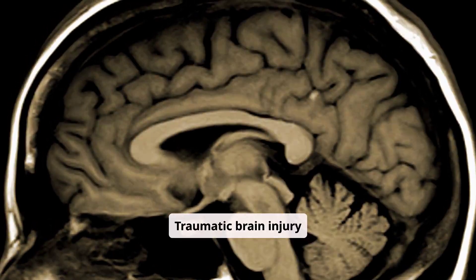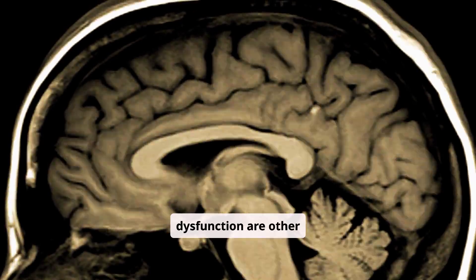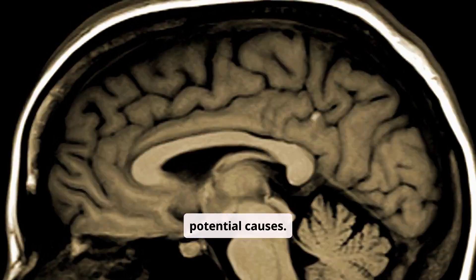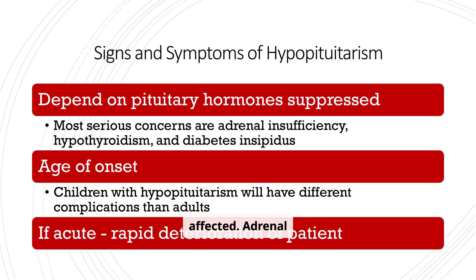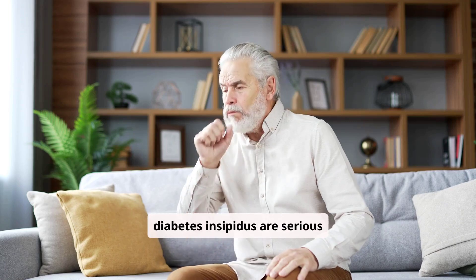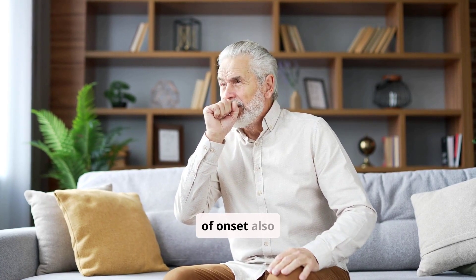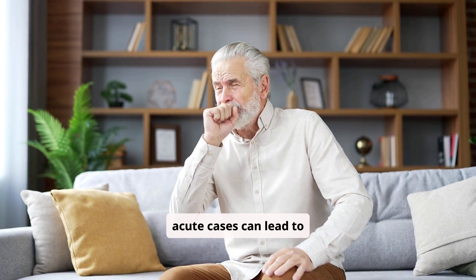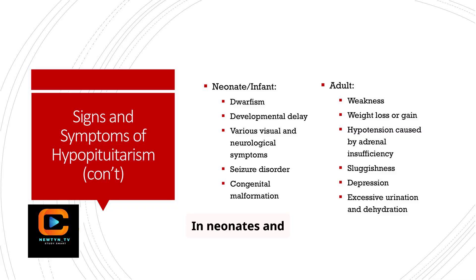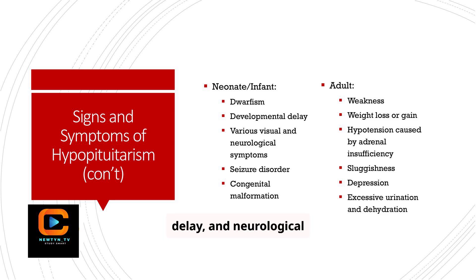Traumatic brain injury and hypothalamic dysfunction are other potential causes of hypopituitarism. The signs and symptoms depend on which hormones are affected. Adrenal insufficiency, hypothyroidism, and diabetes insipidus are serious concerns. The age of onset also influences presentation, and acute cases can lead to rapid deterioration. In neonates and infants, hypopituitarism can manifest as dwarfism, developmental delay, and neurological symptoms.